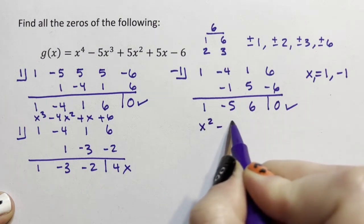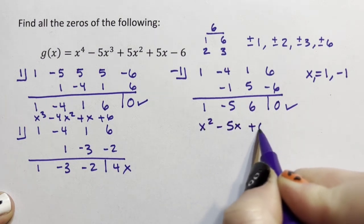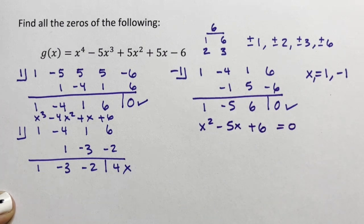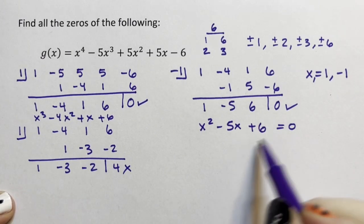And now we have x² - 5x + 6, and I know how to factor that. As soon as I get it down to a quadratic, x², I am not going to use synthetic division anymore. I'm absolutely going to factor either by regular factoring rules or the quadratic formula.